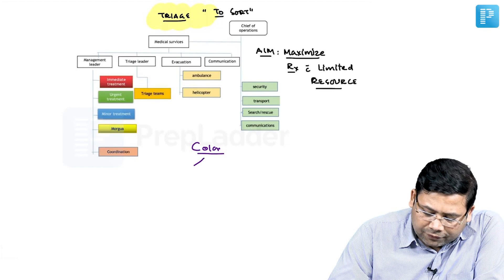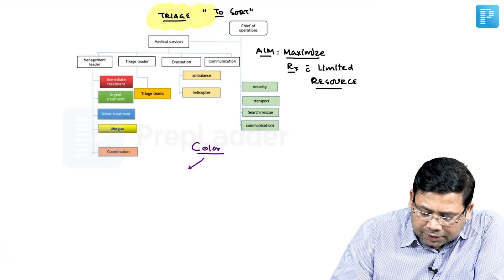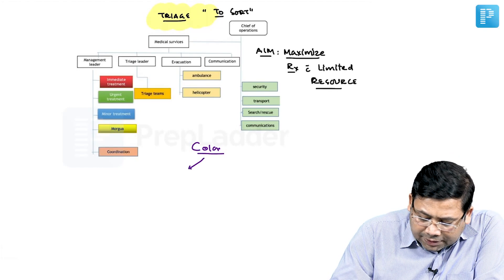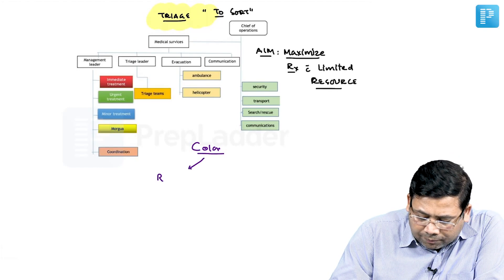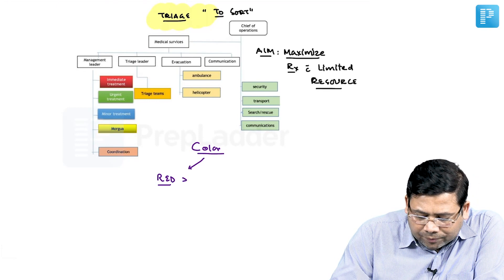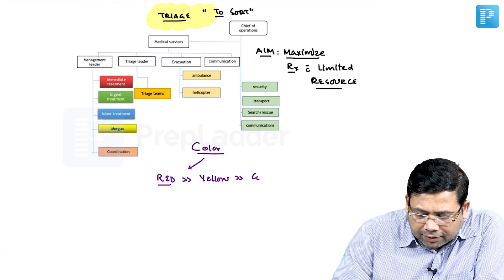The color priority that we have: the best or most important category is red, then we have yellow, then we have green, and then we have black.